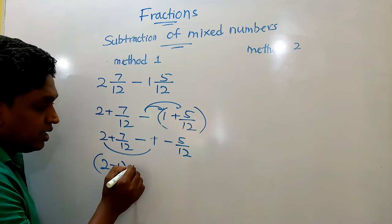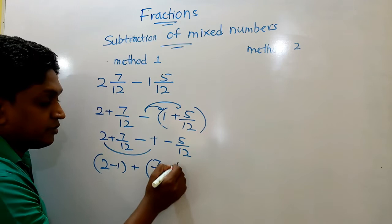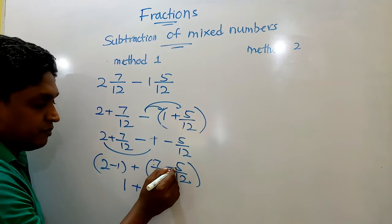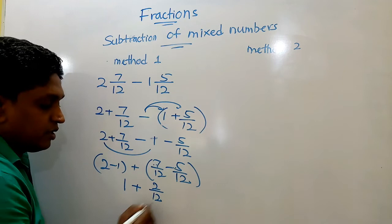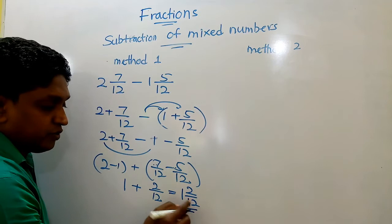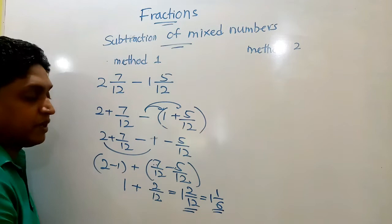Now these should be subtracted. 2 minus 1. The other, you can see, these should be subtracted: 7 over 12 and 5 over 12. Now here 2 minus 1 means 1. 7 over 12 minus 5 over 12 means denominator is 12. And here 2. Finally, we can collect these together. 1 and 2 over 12 is the answer. These 2 and 12 can be simplified. These are divisible by 2 means 1 over 6. So that's the final answer for this problem.